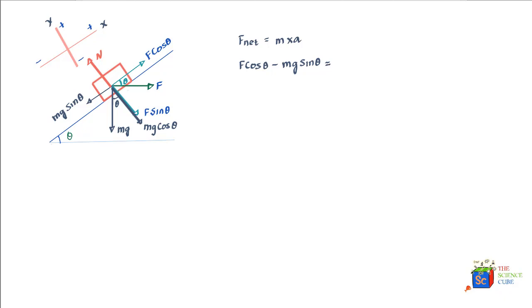We've been told the mass is moving up with constant velocity, meaning zero acceleration, so the sum of forces equals zero. Therefore we get F equal to mg sin theta divided by cos theta, which simplifies to F equals mg tan theta.